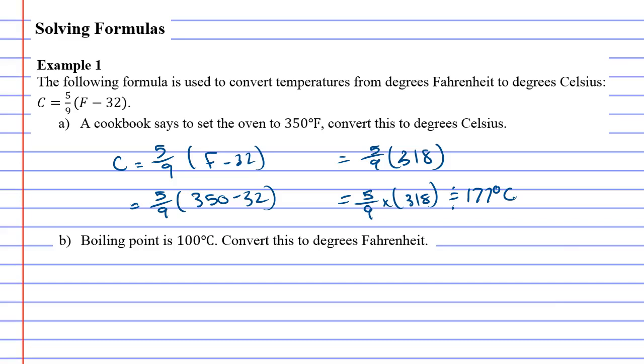Okay, now question B is more challenging because question B says boiling point is 100 degrees Celsius and it wants you to convert this to degrees Fahrenheit. Why is this difficult? Well, because this time we know what C is and we've got to find F, and it makes it difficult because F is on the right side of the equals sign. So we've got 100 equals 5 over 9, F minus 32.